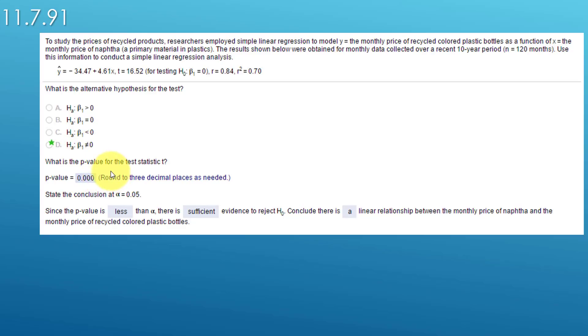The next thing they want to know is what is the p-value for the test statistic t. They give us a t of 16.52 and we can find out what that p-value is using StatCrunch.